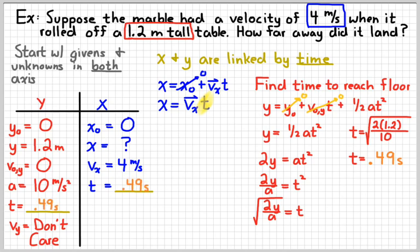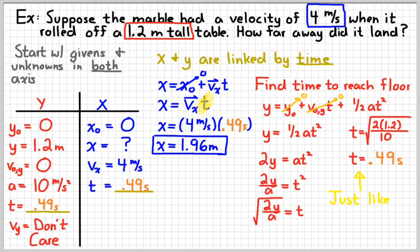So I'm going to fill that into my table. And then I'm going to substitute that for the T in my constant velocity equation for my X direction. And so that would look something like that. Get something around 2 meters for the distance that this marble rolls.